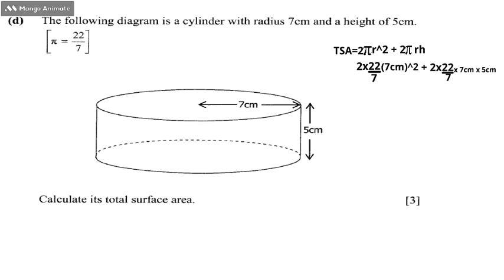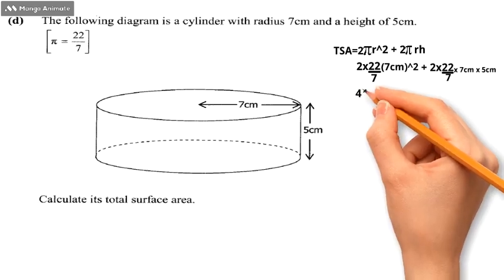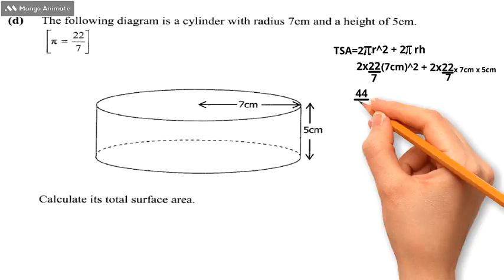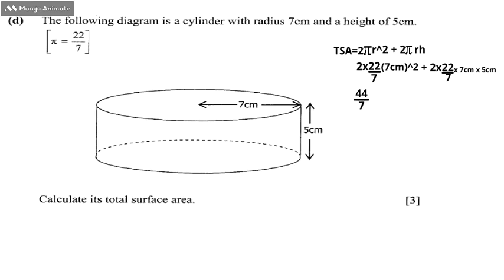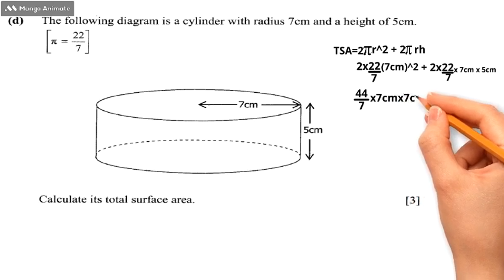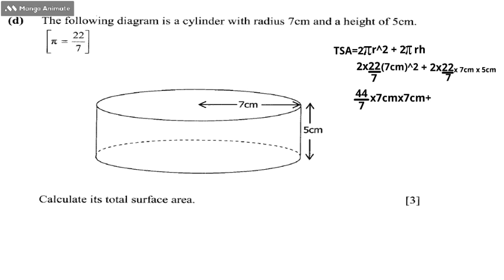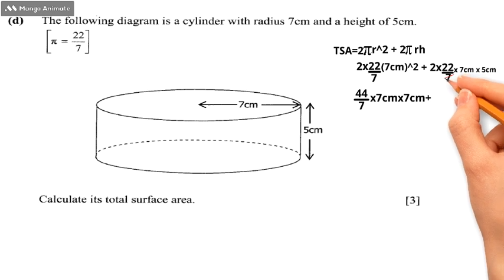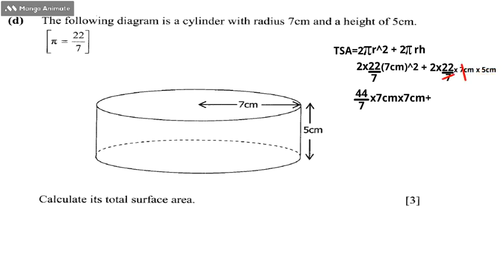Now we simplify these expressions by cancelling where possible. On the left side, 2 times 22/7 gives us 44/7. We expand 7 centimeters squared as 7 cm times 7 cm. The 7 in the numerator and the 7 in the denominator cancel each other out, leaving us with 44, not 44 over 7.